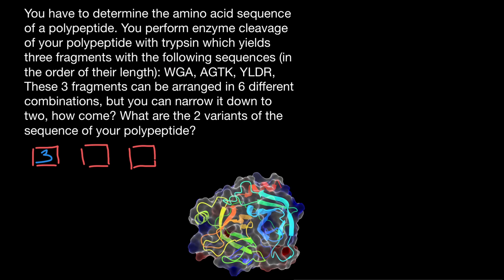If we choose, for example, this one, in order to fill the second place, we have only two left. So let's put two here. And if we use, for example, this fragment to fill this position, then we will have only one left to fill the last position. So we put one here. And if we multiply all these numbers, we are going to get six combinations.